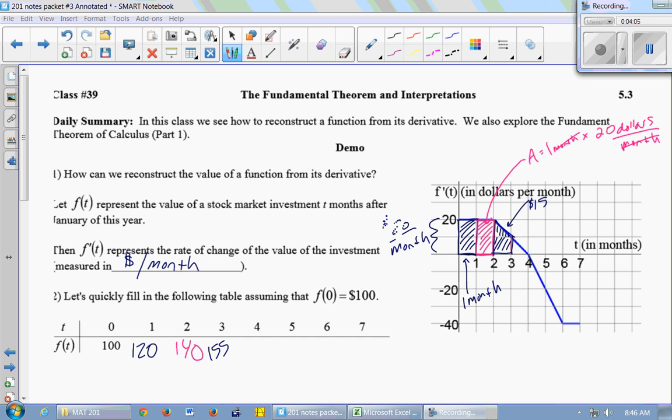Between month 3 and month 4, how did my investment change? Up by $5. So now I'm at $160.